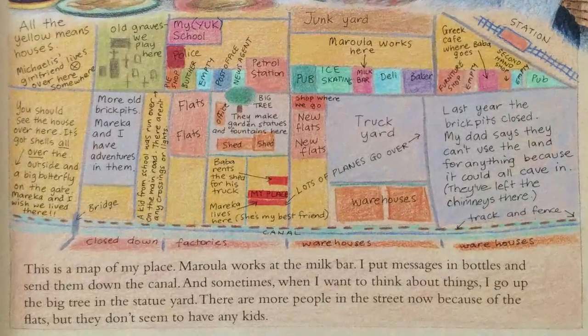This is a map of my place. Marula works at the milk bar. I put messages in bottles and send them down the canal. And sometimes, when I want to think about things, I go up the big tree in the statue yard. There are more people in the street now because of the flats, but they don't seem to have any kids.